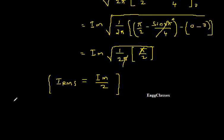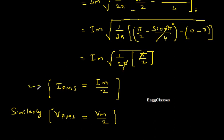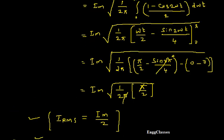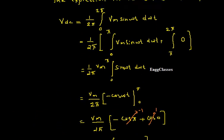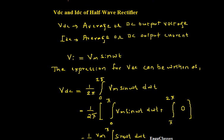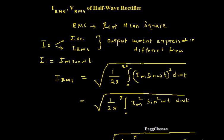Similarly, I will straight away write that VRMS = Vm/2. If you are interested, this can also be proved following the same approach. These expressions for IRMS and VRMS are very helpful in finding the ripple factor and efficiency of your rectifier, and one has to remember them. In this video we have considered the expression for root mean square of current and voltage. If there are any doubts, please let me know in the comment section and subscribe to NG Classes for more videos on basic electronics. Thank you everyone for watching.